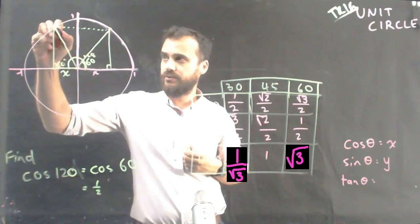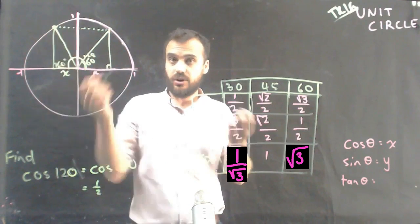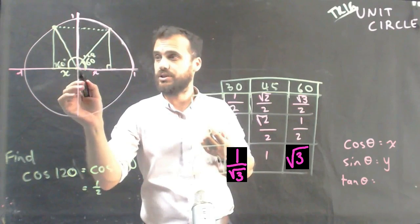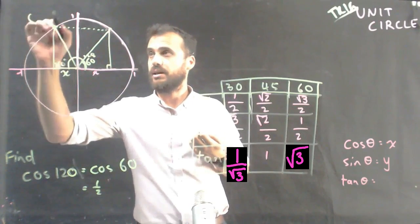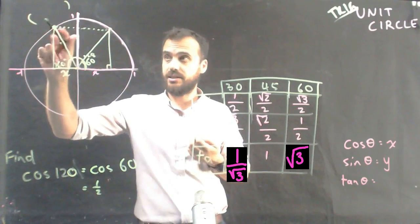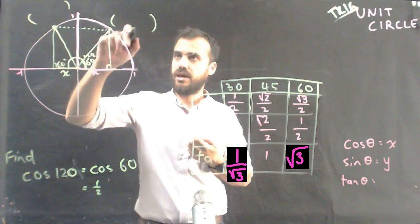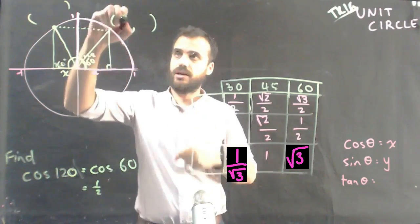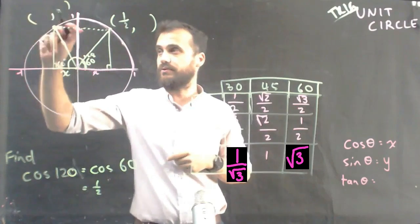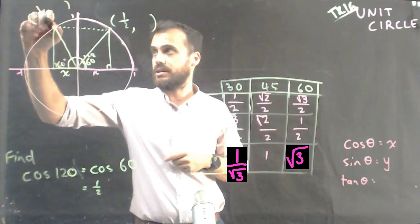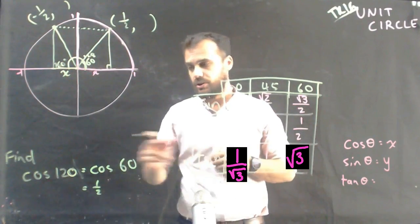Now, the x value of this dot is not positive because here's the origin. The x value is here. It would actually be negative. So the x value of this is one half. But the x value of this is negative a half.